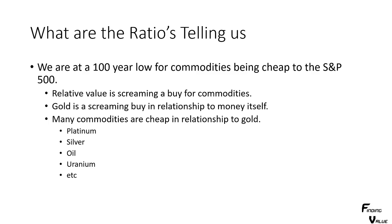What are the ratios telling us? We are at a 100-year low for commodities being cheap to the S&P 500 — they've never been this cheap in 100 years. Gold is screaming a buy in relationship to money itself. Gold is cheap to the money supply and stocks, and commodities are cheap in relationship to gold — this is called a double ratio bet. When it revalues, gold will revalue higher against other assets and commodities will revalue against gold, accounting for the money supply and inflation.